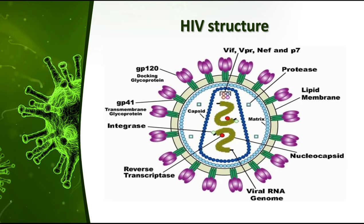HIV is an example of an enveloped virus. It has an envelope, a capsid, and a nucleocapsid containing the viral RNA genome needed for replication. At this time I want to mention three major enzymes that HIV uses to hijack the host cell's DNA machinery: protease, integrase, and the infamous reverse transcriptase.